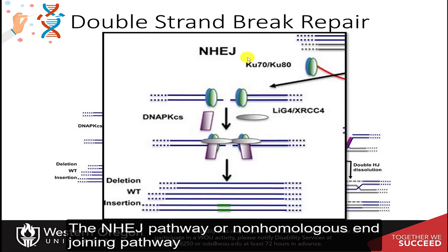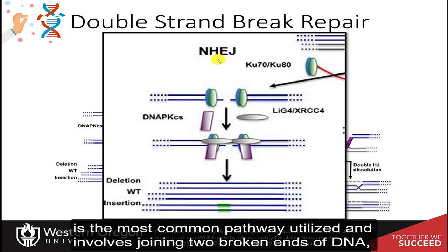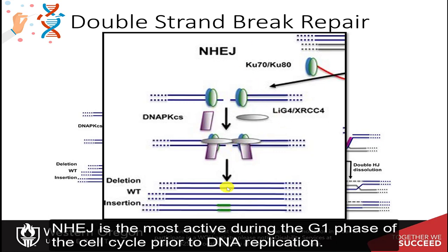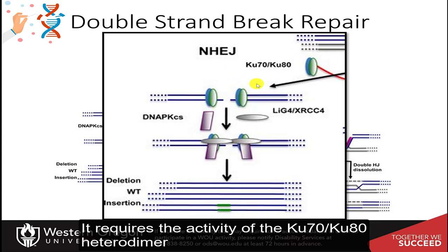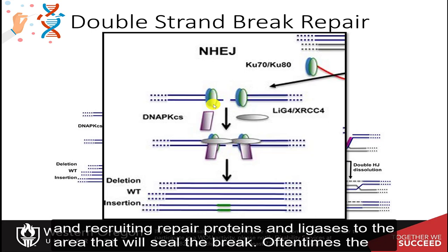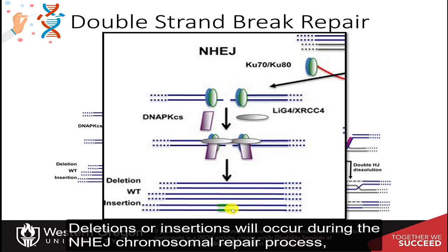The NHEJ pathway, or non-homologous end-joining pathway, is the most common pathway utilized and involves joining two broken ends of DNA independent of their sequence homology. NHEJ is most active during the G1 phase of the cell cycle prior to DNA replication. It requires the activity of the Ku70/Ku80 heterodimer, which recognizes broken DNA ends and recruits repair proteins and ligases to seal the break. Oftentimes, deletions or insertions will occur during the NHEJ repair process, as non-homologous ends are used to join the damaged areas.